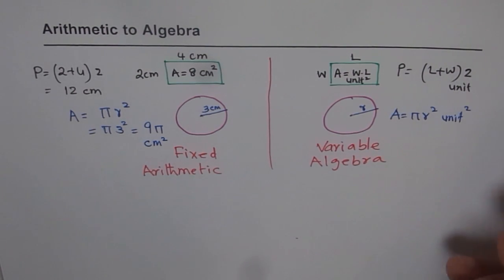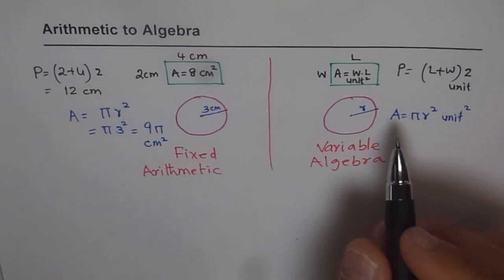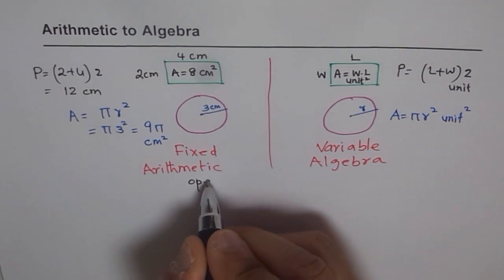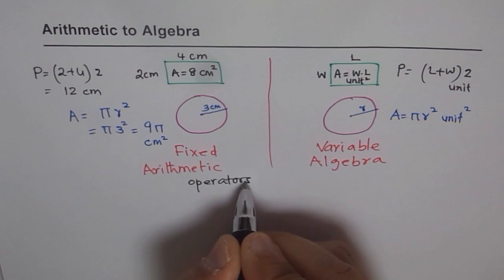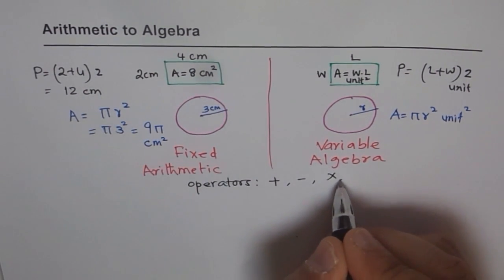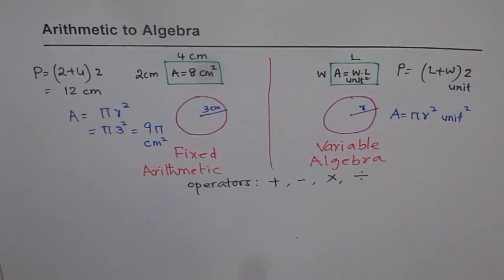That units will be same as units for length and width. So we can do addition, multiplication, division, things like that. So what we have here is common thing is operators. We call these plus minuses operators. The operators for us are signs like plus, minus, multiplication, and division. So we have the same operators for arithmetic. We have exactly same operators for algebra also.